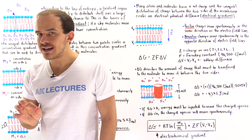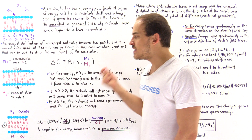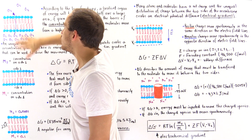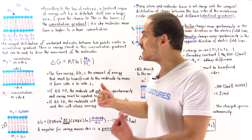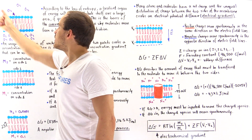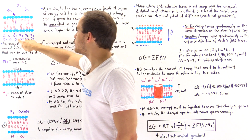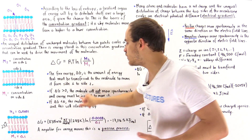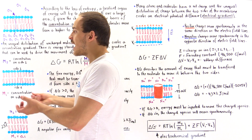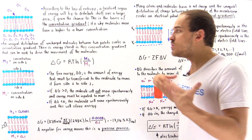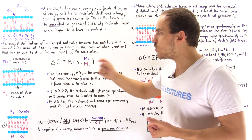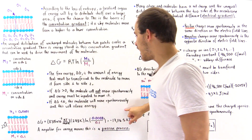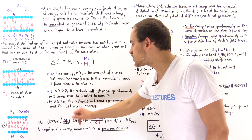But if ΔG is negative, the molecule will move spontaneously because it is moving down its concentration gradient from a high to a low concentration. These molecules will move spontaneously from side one to side two according to the law of entropy, and each one releases a certain amount of energy — that's why we have a negative ΔG. In this case, the type of transport will be passive transport, and for a nonpolar molecule this will be simple diffusion across the membrane.